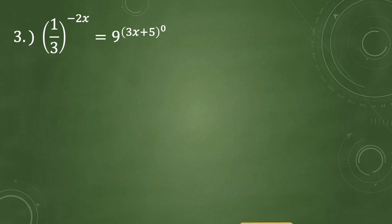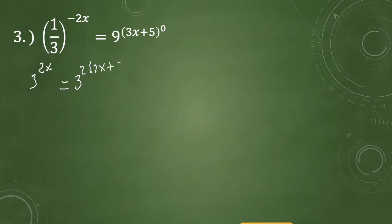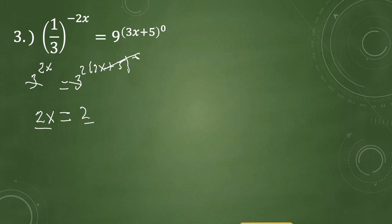For number 3, we have 1 third raised to negative 2x equals 9 raised to 3x plus 5 raised to 0. Rewriting 1 third as its reciprocal gives 3, and the exponent changes sign, so negative 2x becomes 2x. This equals 3 raised to the 2nd power times 3x, plus 5 raised to 0. Since any number raised to 0 is 1, it simply cancels. Dropping the base, we get 2x equals 2, and dividing both sides by 2 gives x equals 1.